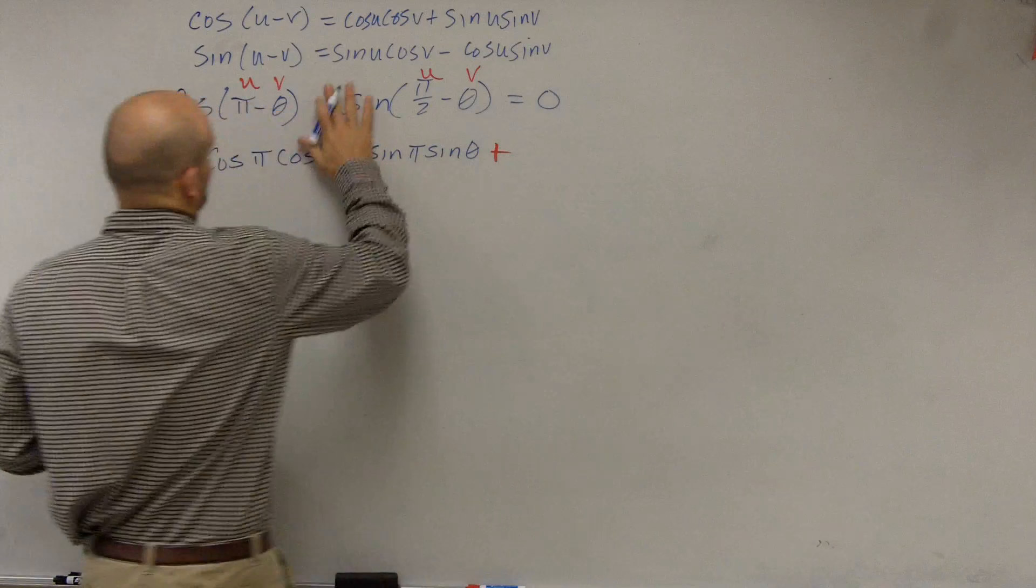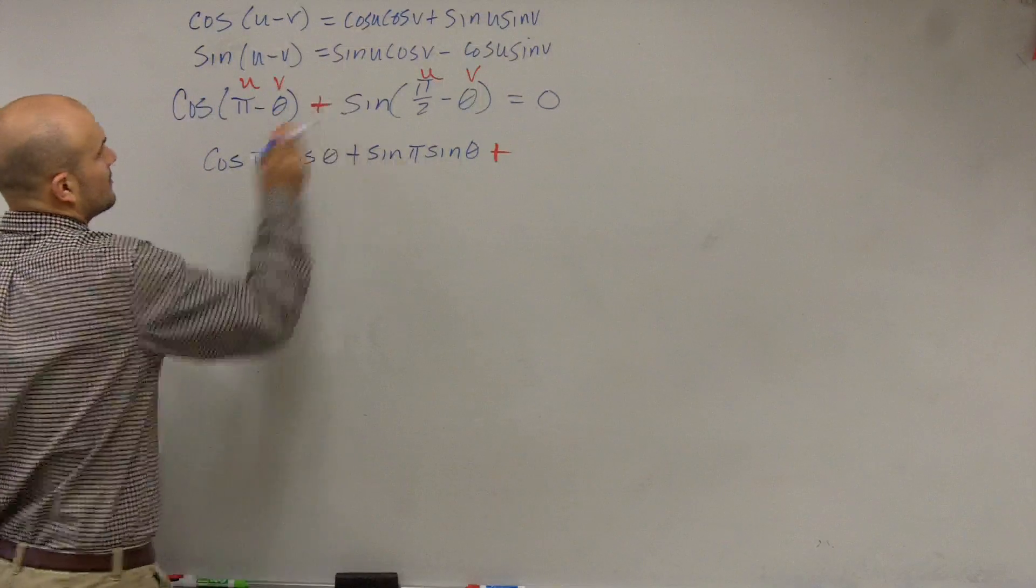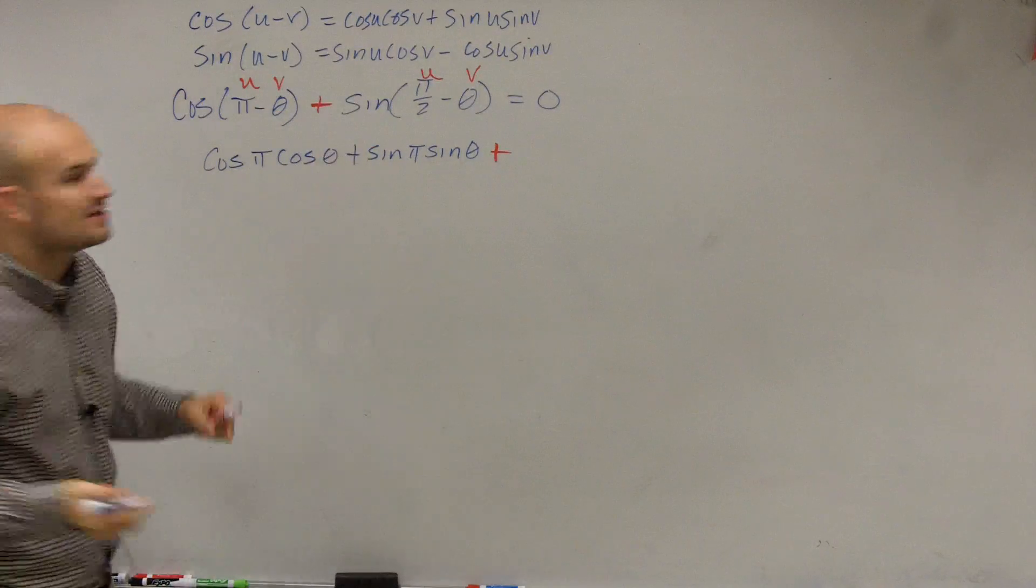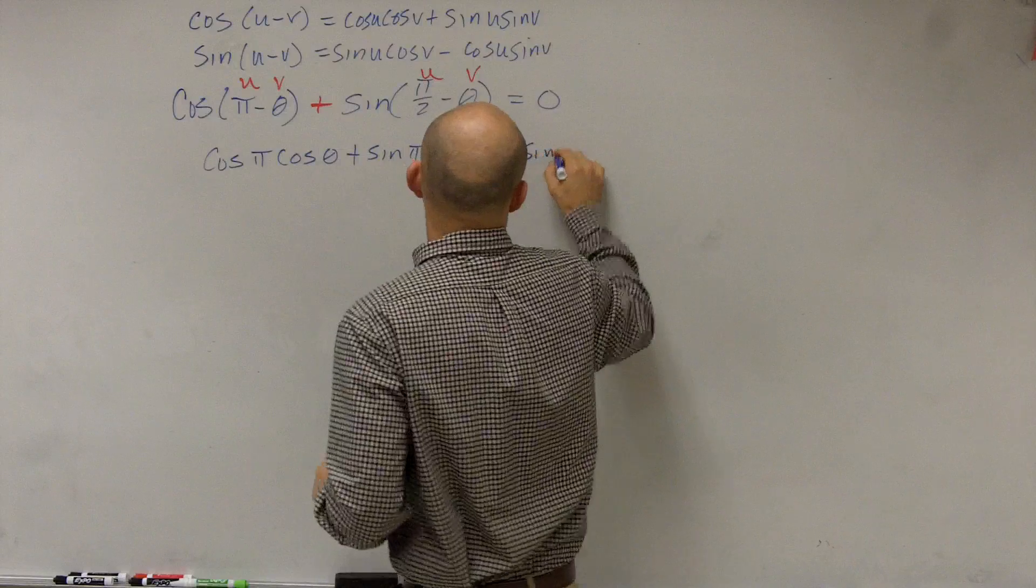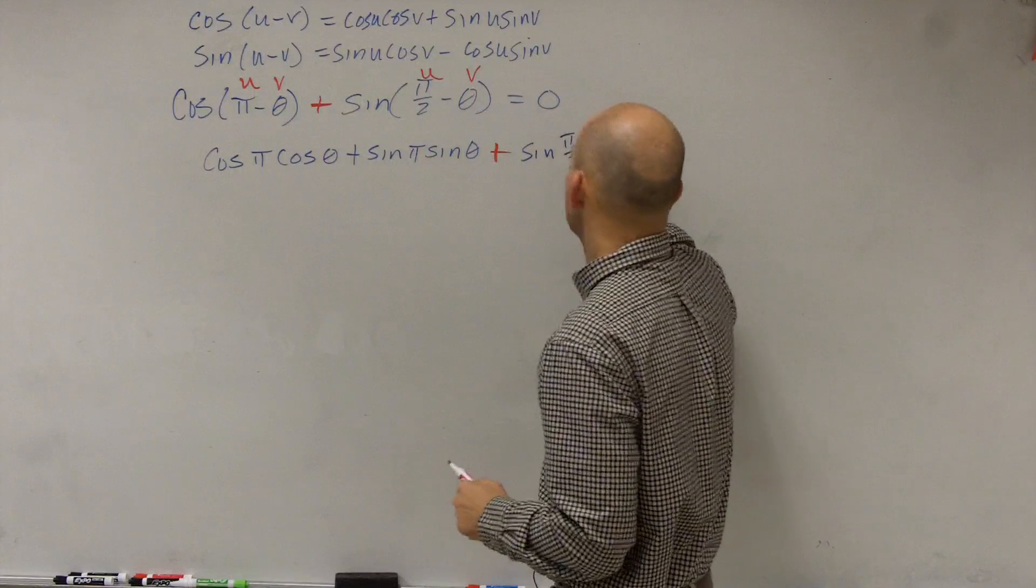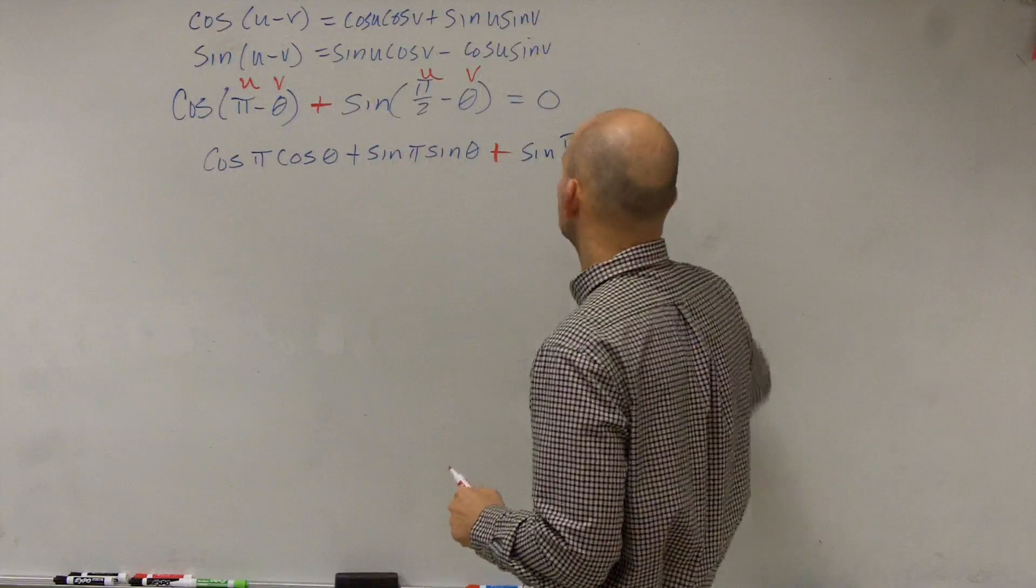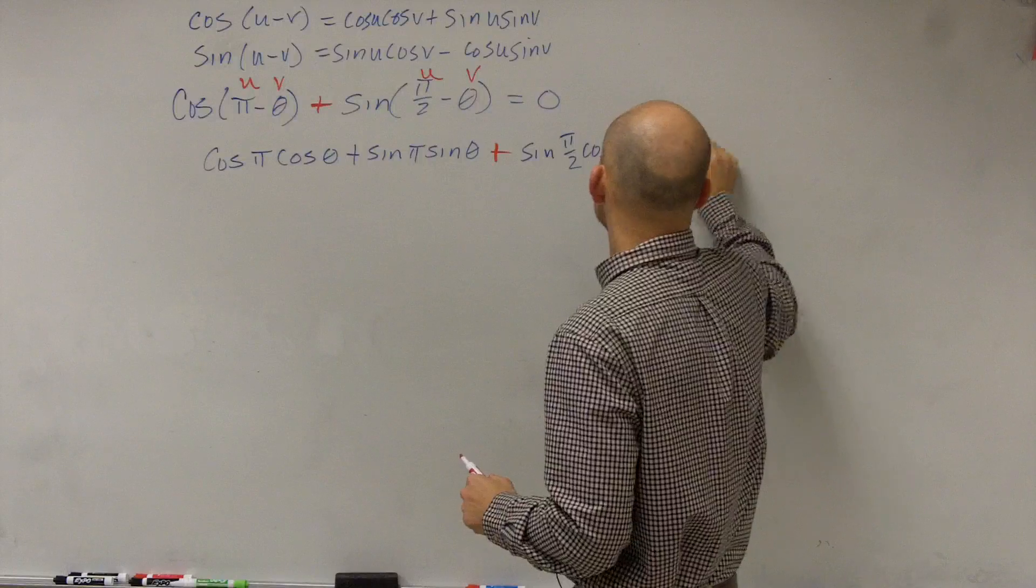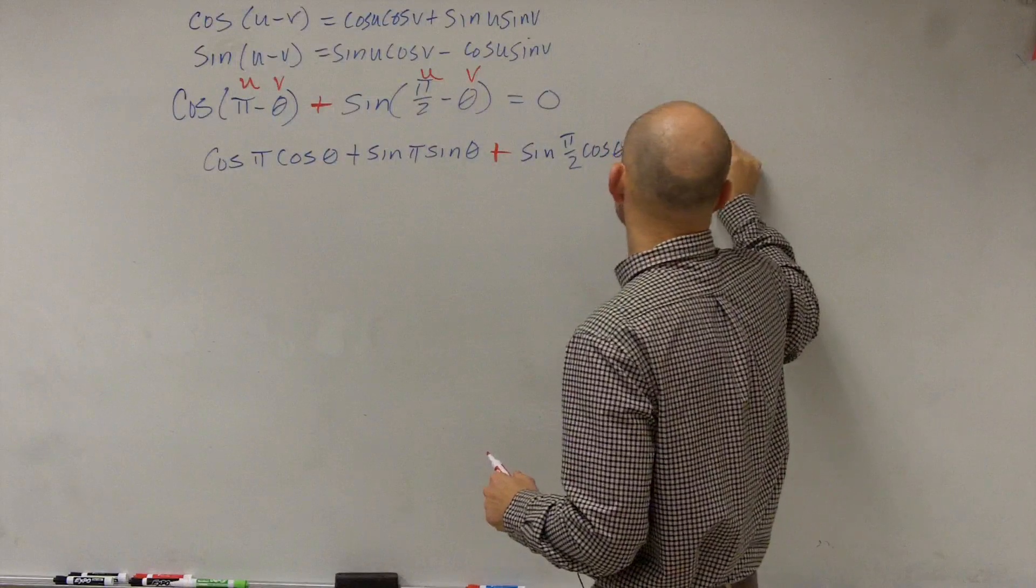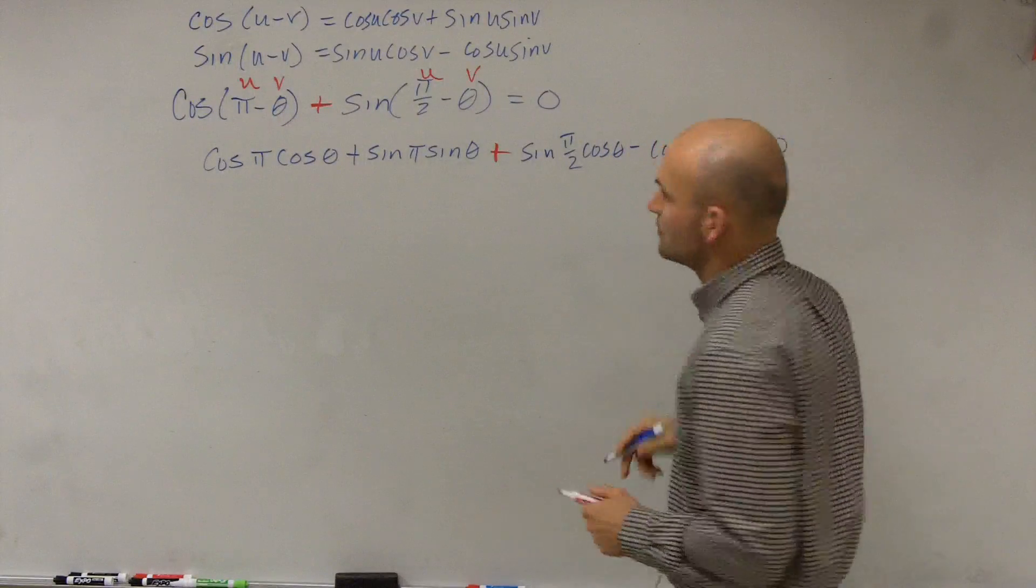Plus, which is my plus right here, then we have to do the sine. Sine of pi over 2 times cosine of theta minus cosine of pi over 2 times sine of theta equals 0.